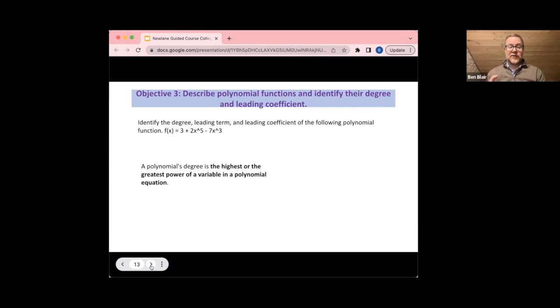Yes, we have three terms: 2x to the fifth and negative 7x to the third, those are the three terms. Okay, the leading term isn't necessarily the first term—the leading term is the term associated with the highest power, so that is 2x to the fifth.